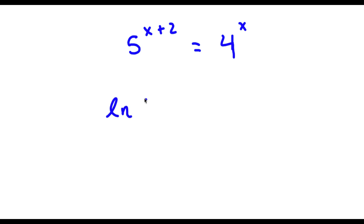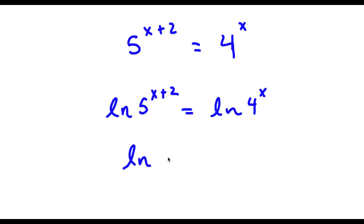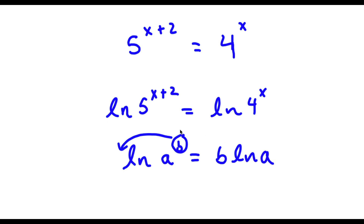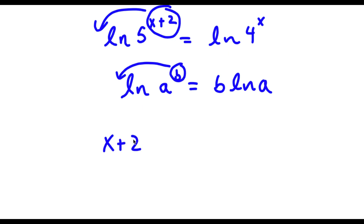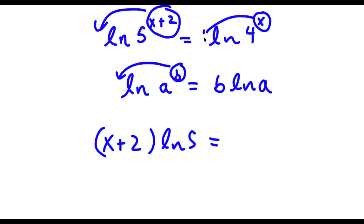So now I have ln of 5 to the power of x plus 2 is equal to ln of 4 to the power of x. Now if I have something in the form ln a to the power of b, I can move the exponent b to the front, so this equals b times ln a. So for ln 5 to the power of x plus 2, I can move x plus 2 to the front: that's x plus 2 times ln 5, which is equal to ln 4 to the power of x. I can move x to the front, so it's x times ln 4.